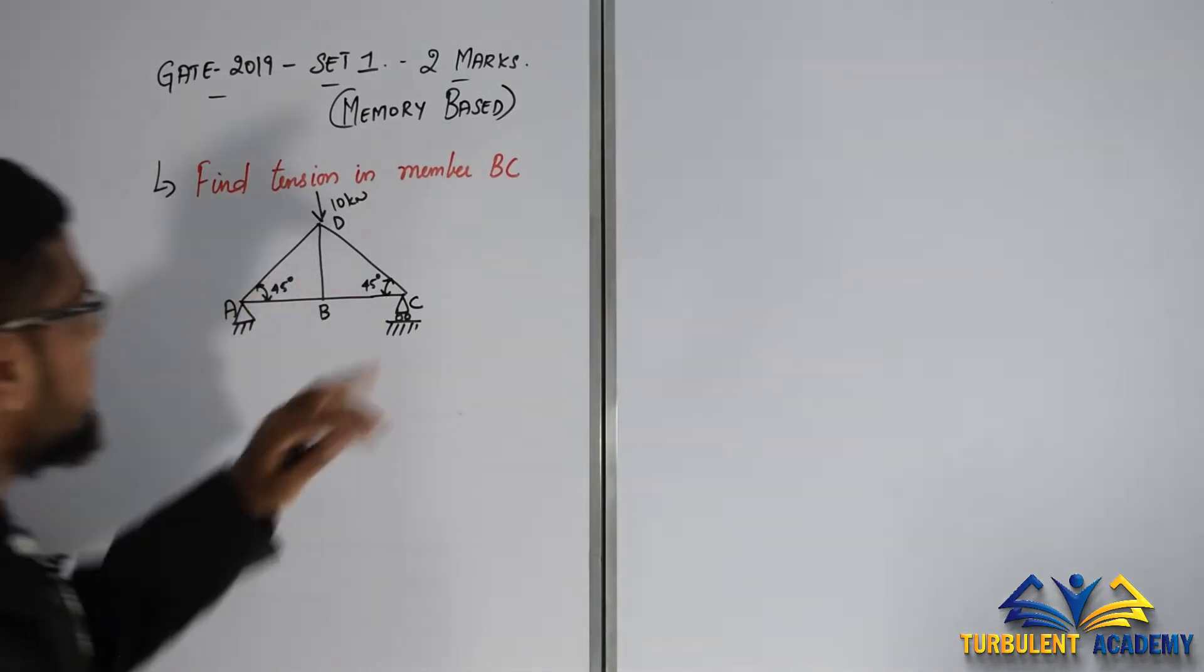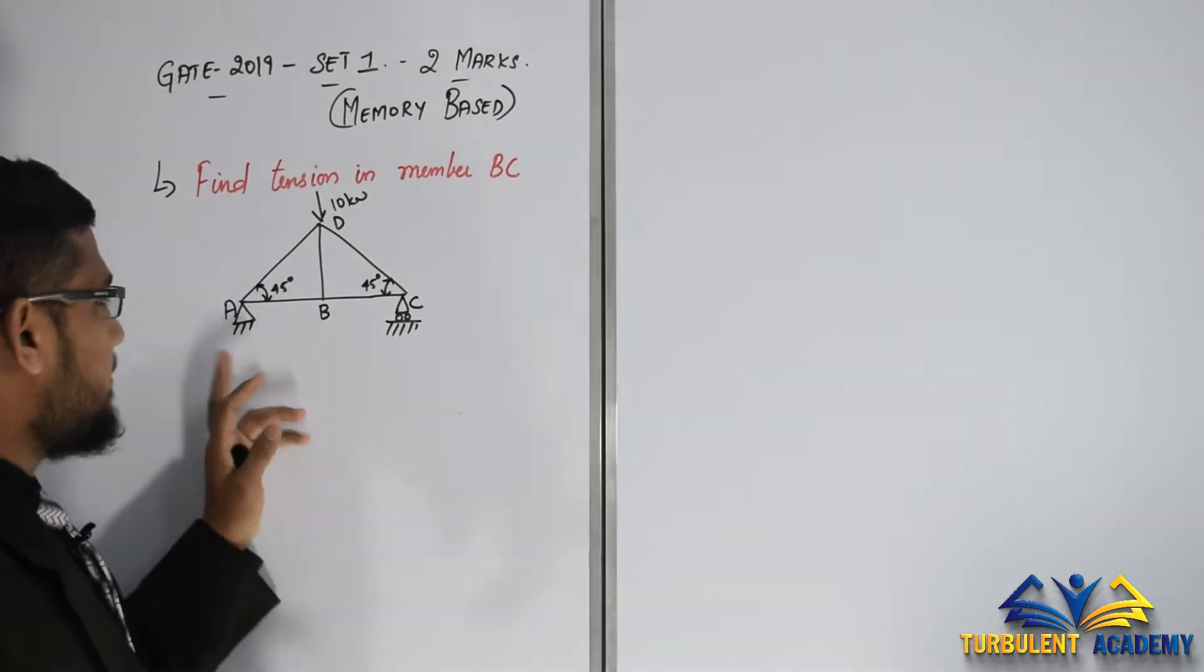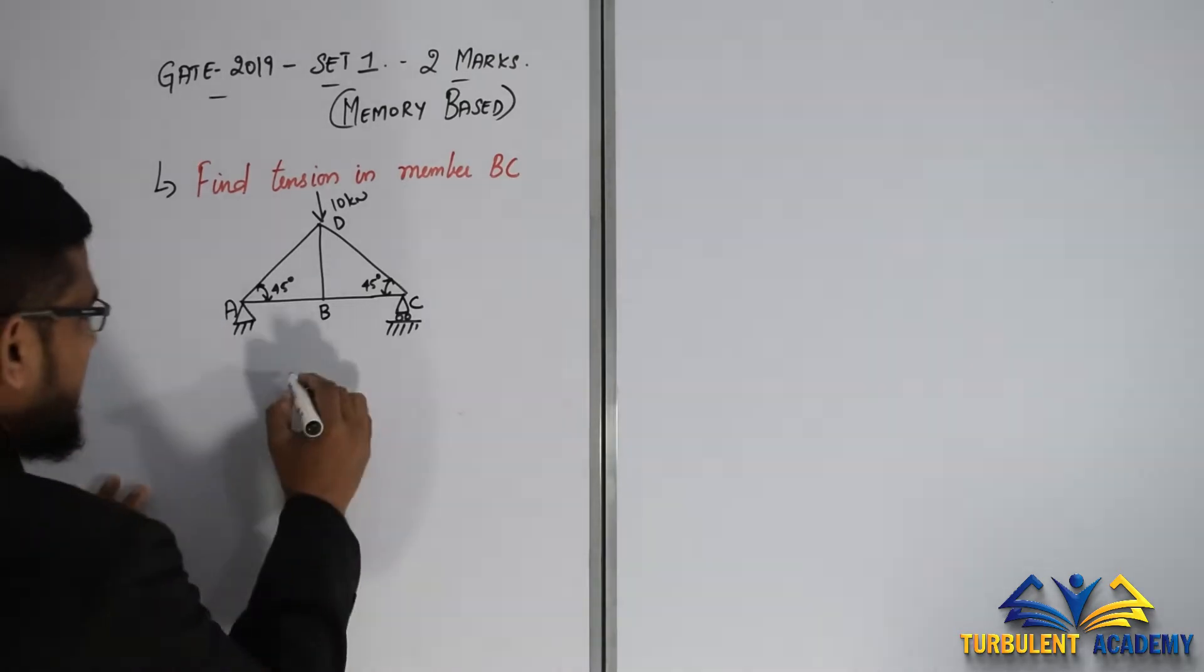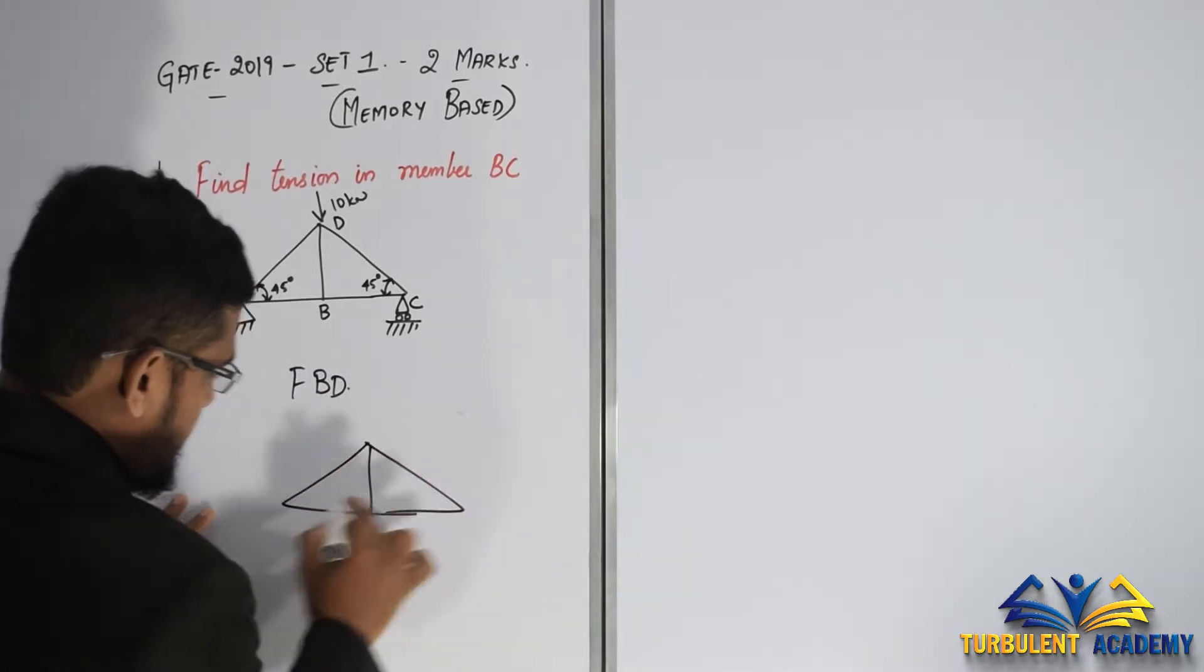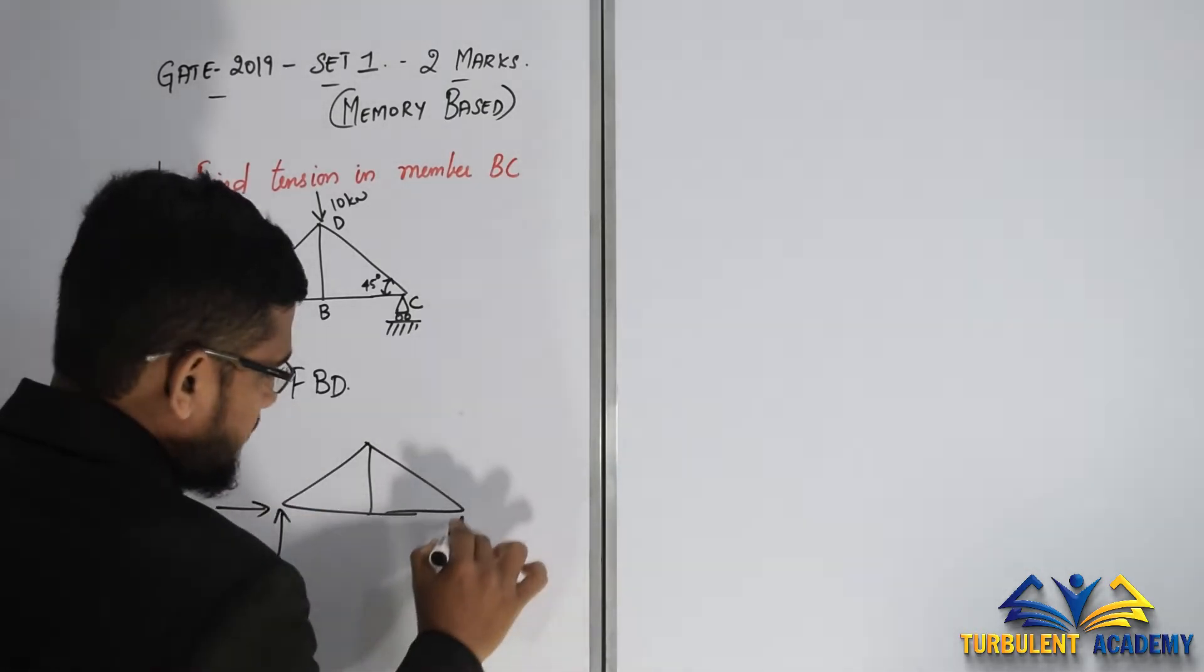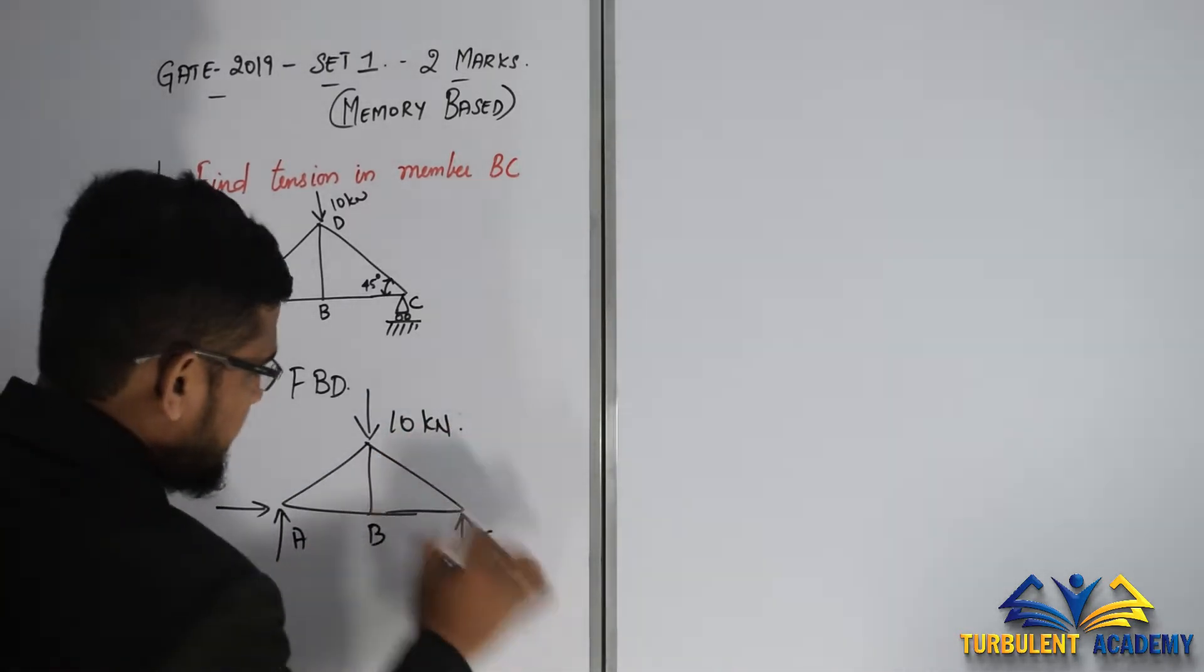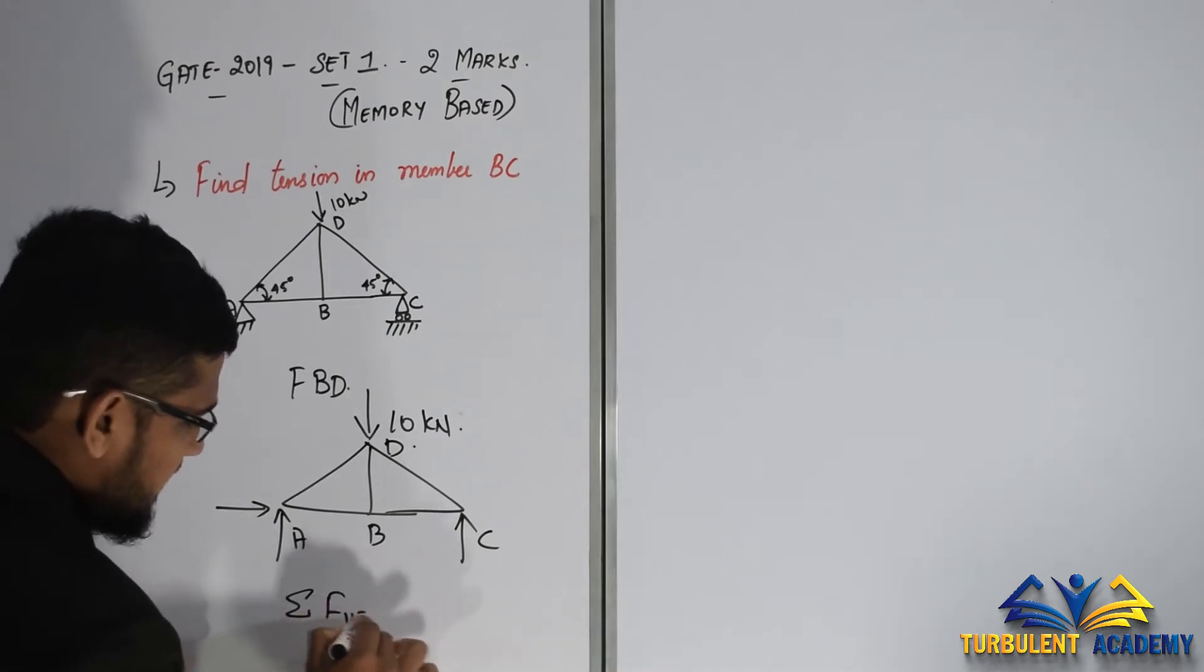Find tension in member BC. This is the member BC, and they have given a structure in which we have a pin joint and a roller joint, as we have seen in previous lectures. So just draw a free body diagram - FBD. We have a pin support with vertical and horizontal reactions, roller support with vertical reaction, and the external load of 10 kilonewton. So we have A, B, C, and D.